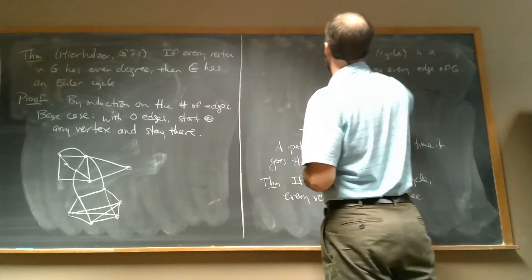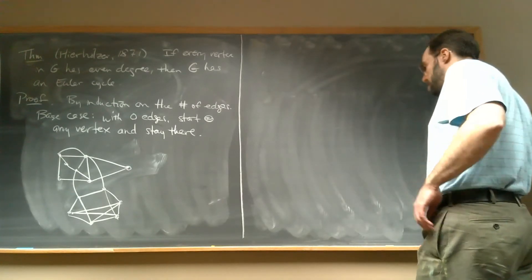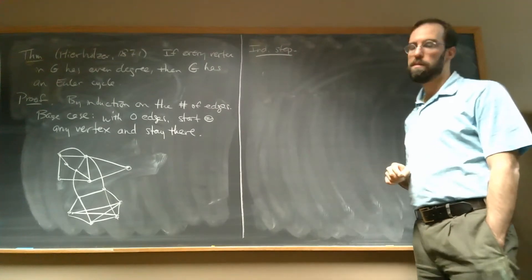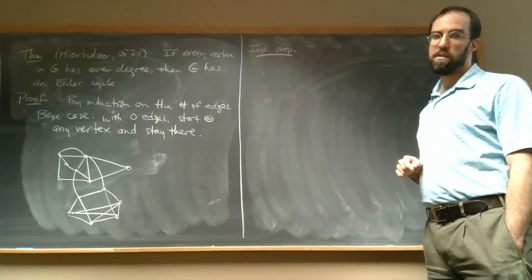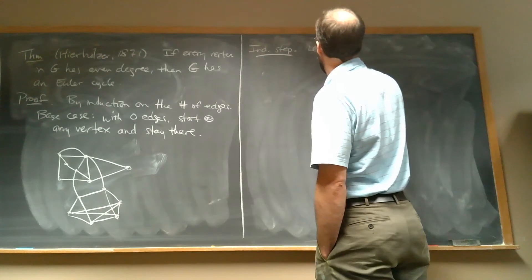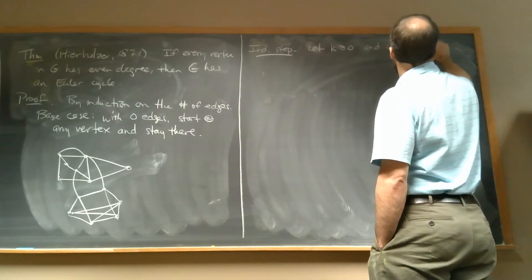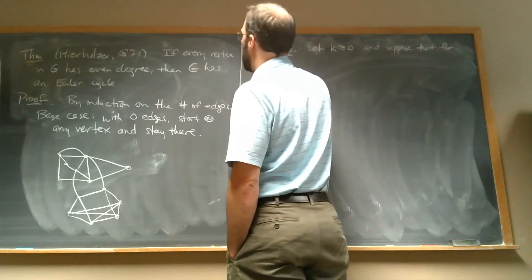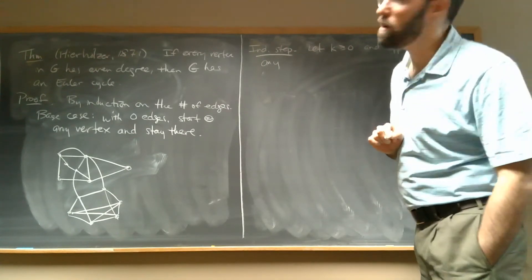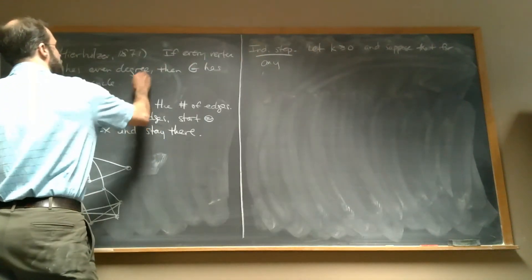For the induction step, we actually need strong induction. Also, I just realized I forgot a very important word — G has to be connected. If I have a graph that's not connected, I can't make a cycle that goes through every edge, because I can't get from one part to the other. Even if every vertex has even degree, I'm stuck in whatever part I started.